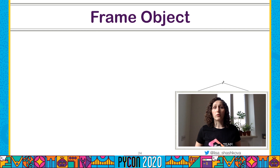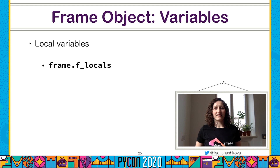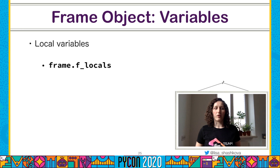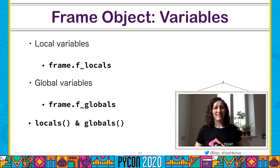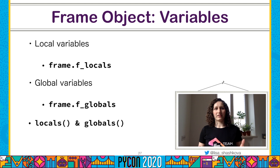Let's check what information is stored inside a frame object. First of all, it contains a dictionary with local variables of the current scope. If you define some variable, you can access it by its name. It's just a usual dictionary — you can iterate over it, but you can't update it from Python code; that's only possible from the C API. Frame objects also give you access to the global variables dictionary — global variables for the current module. To be honest, you don't actually need the frame object for this, because there are built-in functions locals() and globals() which return exactly the same dictionaries.